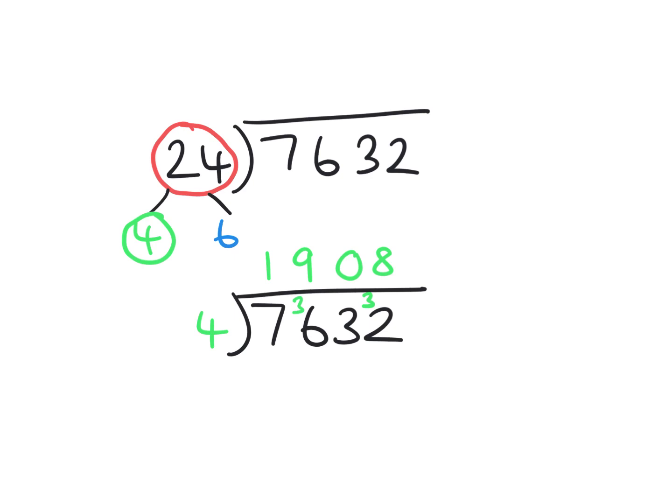We use this value from the first step and divide by the second factor, 6. 6 into 1 won't go, carry the 1 over. 6 into 19 goes 3, carry the 1. 6 into 10 fits once, carrying 4 over. 6 into 48 goes 8 times, giving us our final answer of 318.